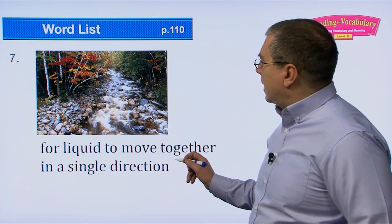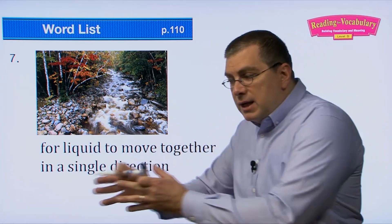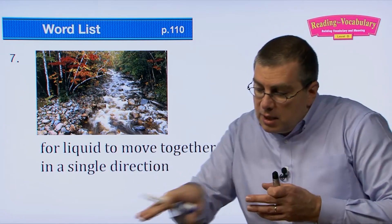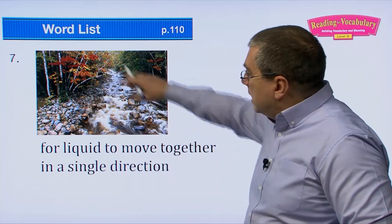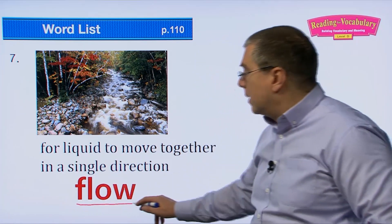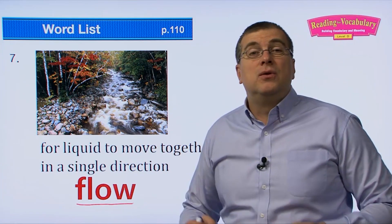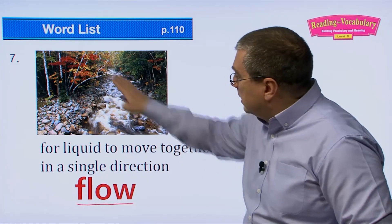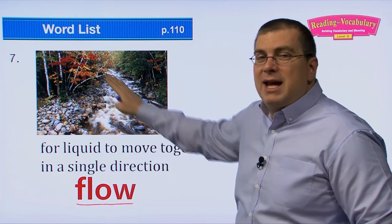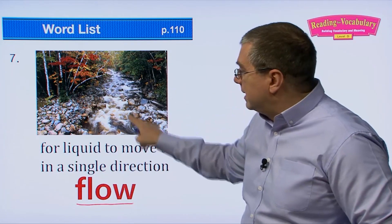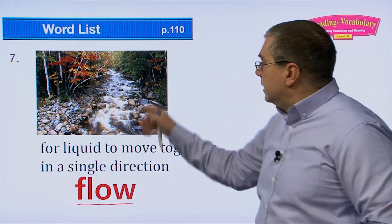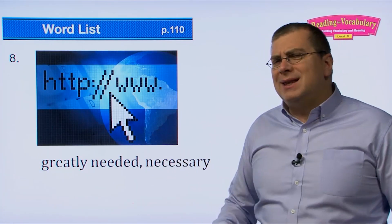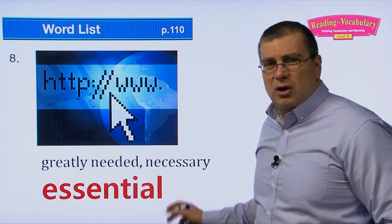Number seven: for a liquid to move together in a single direction — that is to flow. This stream is moving downhill. Flow is a verb — to flow. This small stream is flowing quickly because it's going downhill. Water will flow quickly downhill, making this a very active stream.